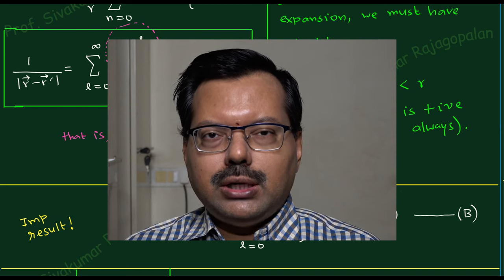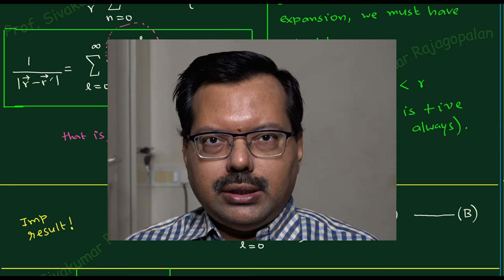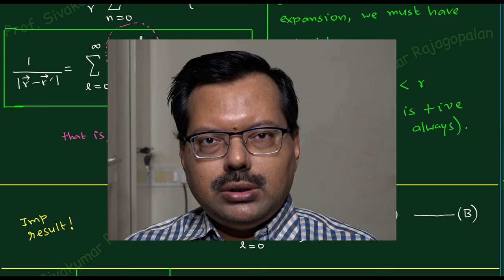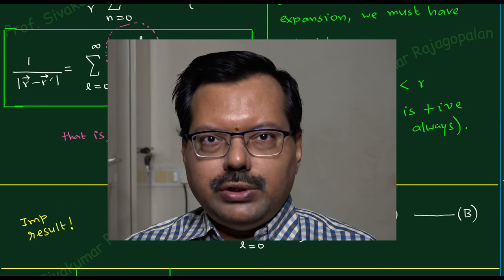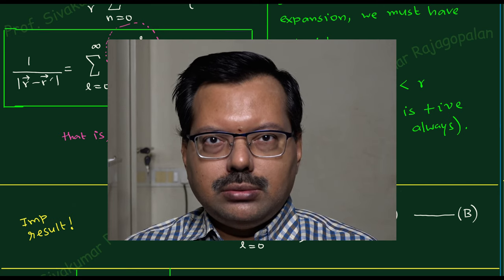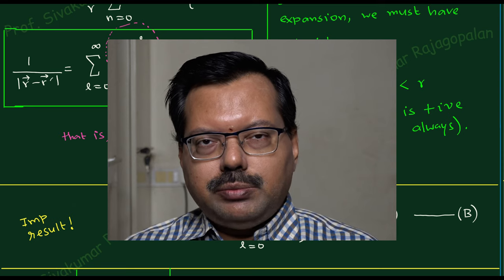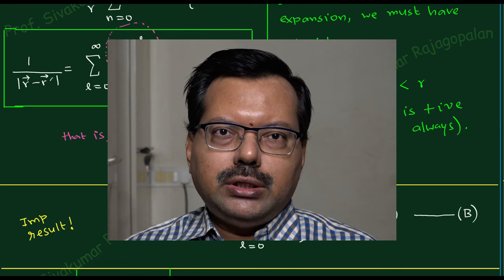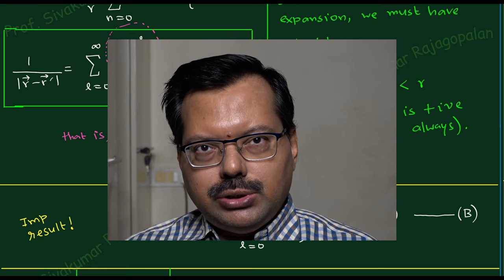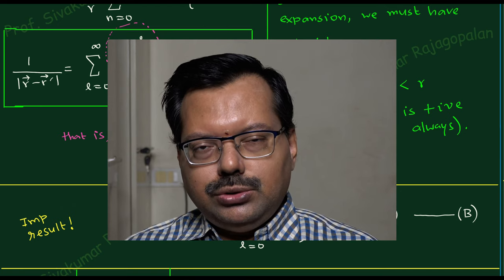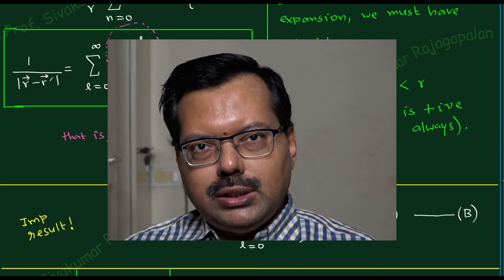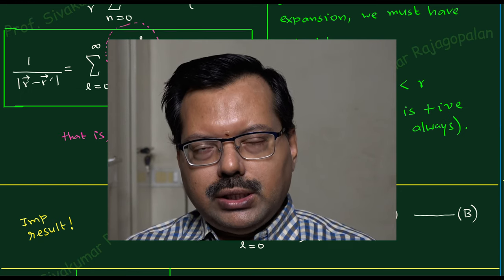Hello students, welcome back to the next lecture on classical electrodynamics — today we have lecture number 10. In the last few classes we have been discussing the calculation of electrostatic potential in the spherical polar coordinate system. Two ways to calculate the electrostatic potential are by the solution of the Laplace equation or the Poisson equation, as the case may be. A key quantity entering the picture is 1 divided by |r − r′|, and in the last class we saw how to rewrite that quantity as an infinite power series.